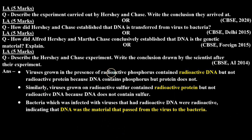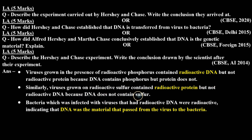Viruses grown in the presence of radioactive phosphorus contained radioactive DNA but not radioactive protein, because DNA contains phosphorus but protein does not. Similarly, viruses grown on radioactive sulfur contained radioactive protein but not radioactive DNA, because DNA does not contain sulfur. Bacteria that were infected with viruses that had radioactive DNA were radioactive, indicating that DNA was the material that passed from the virus to the bacteria.